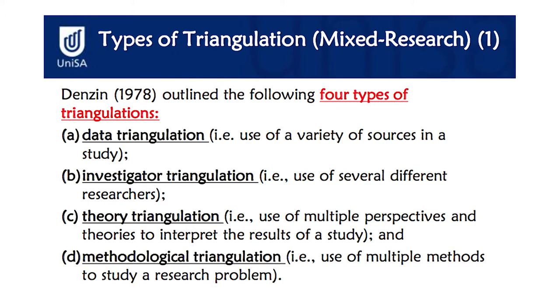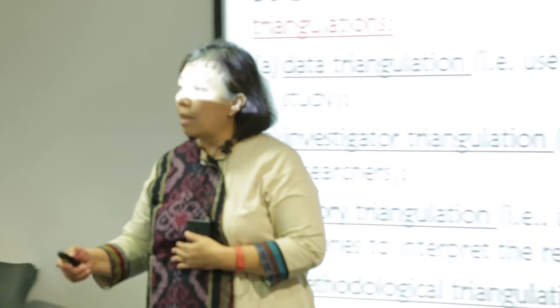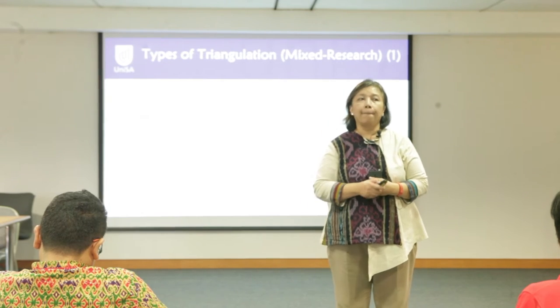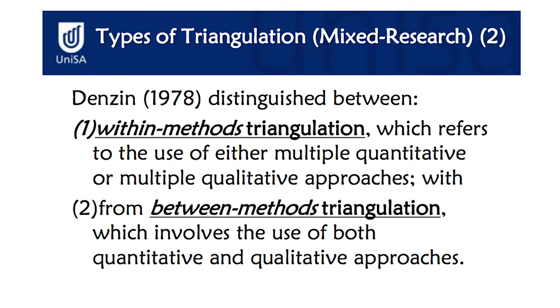There are four types of triangulation: data, investigator, theory, and methodological. The last one is the method — quantitative and qualitative. There are two types: within one paradigm, or between paradigms.